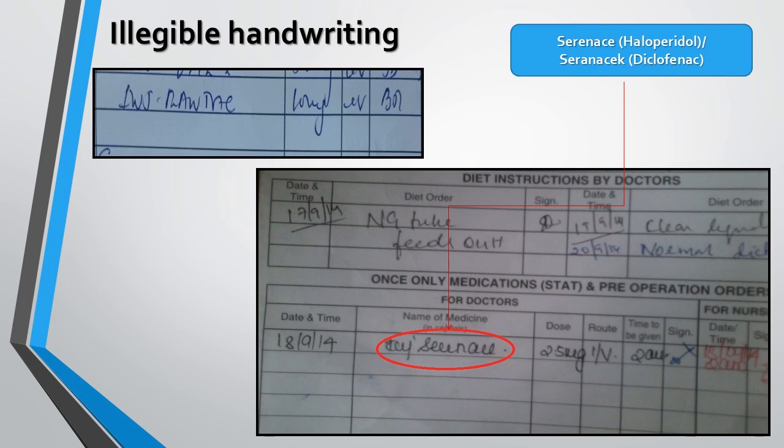Similarly, Serenase or Haloperidol written illegibly can result in another sound-alike drug, Serenade or Diclofenac, being mistakenly administered. In such cases, the dose of the drug should be carefully considered.